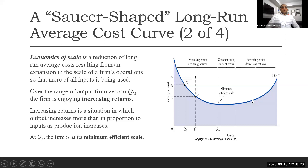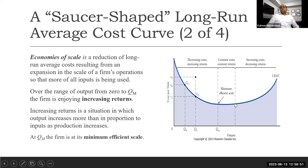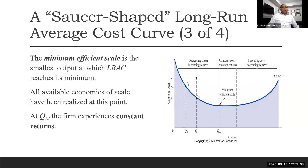Any business wants to know what level of output to produce. The ideal is to produce within the range of constant returns or constant cost, where the long run average total cost is at its minimum. Beyond this point it is not beneficial to operate, as costs begin to rise. Over the range from zero to QM, the firm enjoys increasing returns, and QM is the minimum efficient scale.